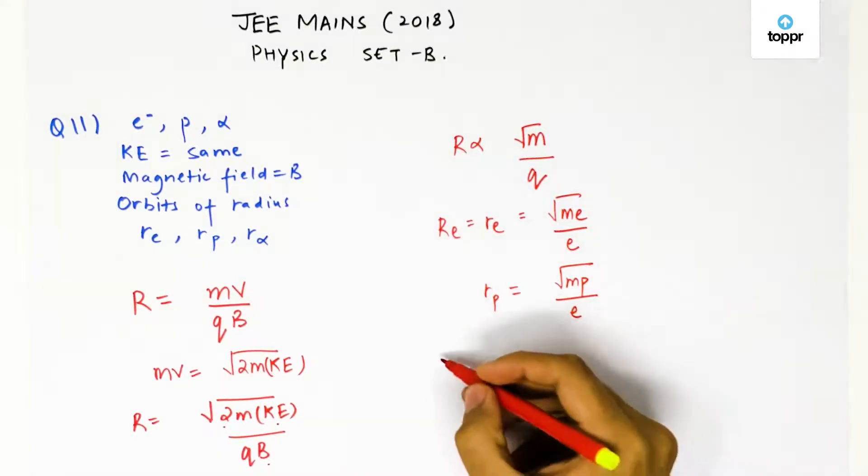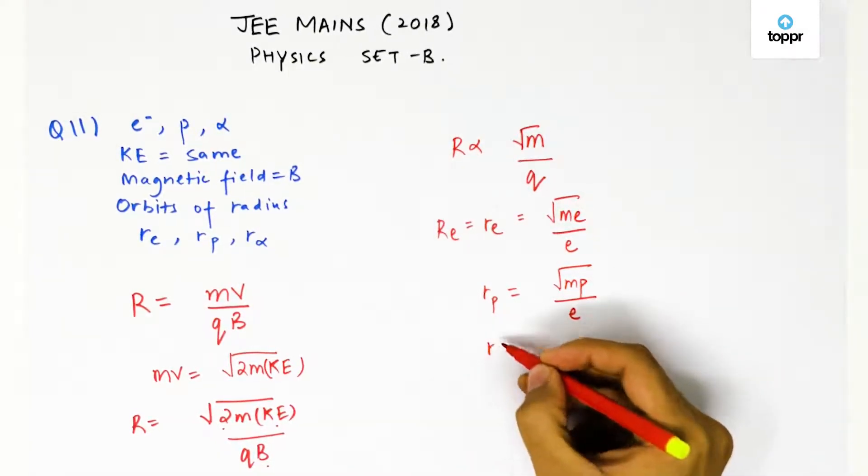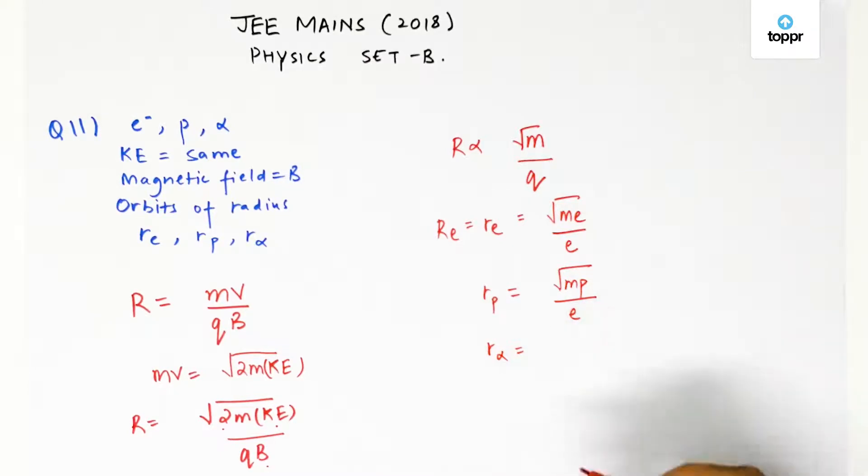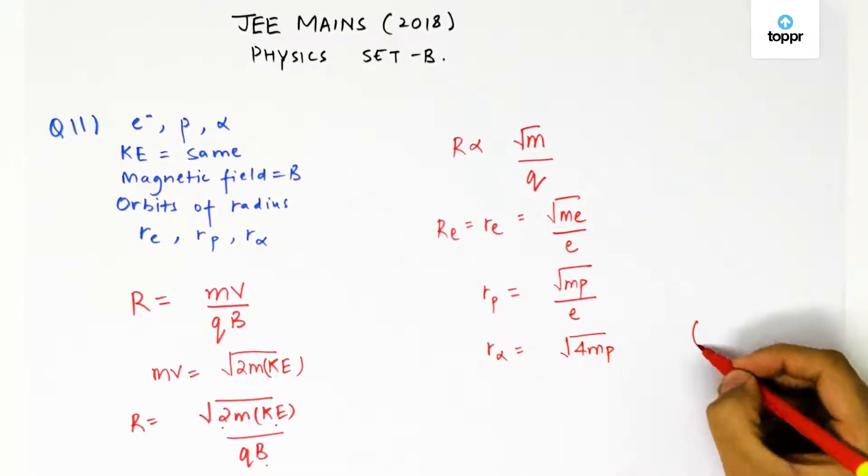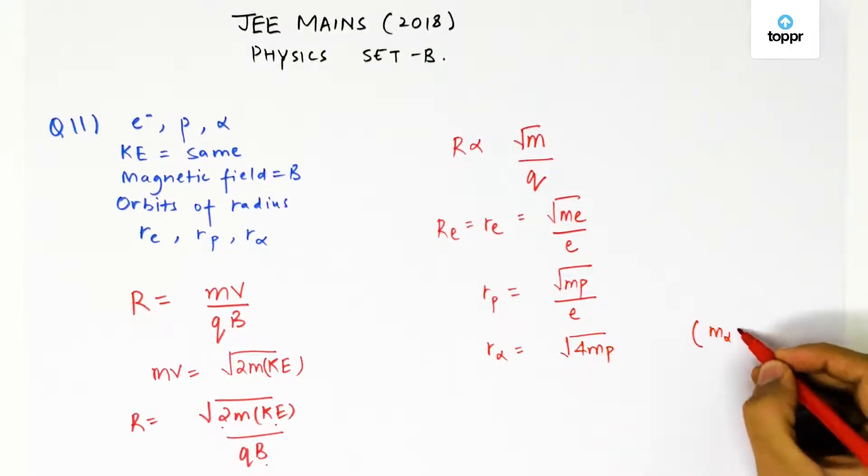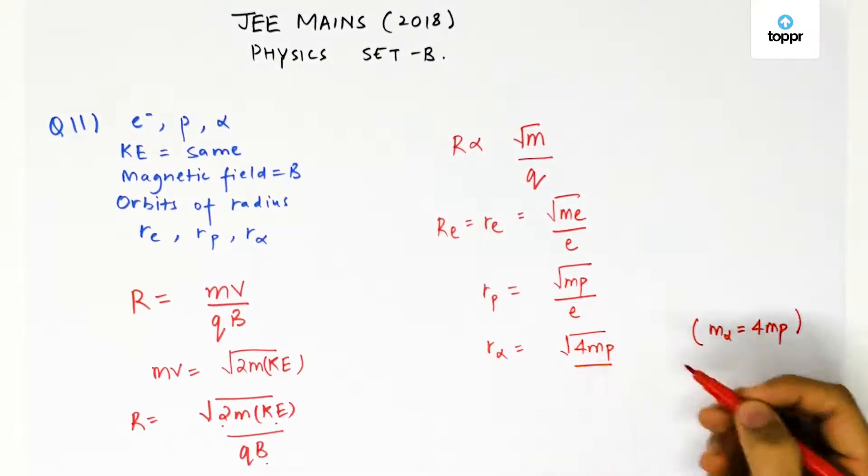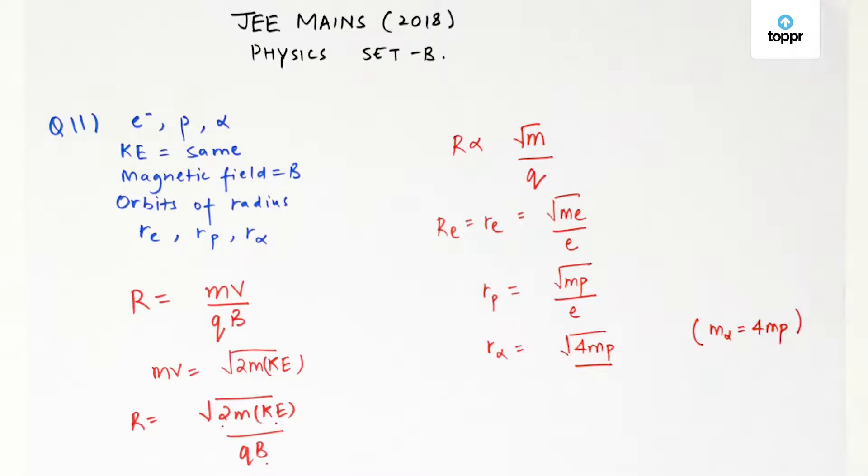And for the alpha particle, it would be mass of the alpha particle. Now, what is mass of the alpha particle? Mass of an alpha particle is 4 times mass of a proton. This is very important to note here that mass of an alpha particle is 4 times mass of the proton. And what about its charge? Its charge is twice that of an electron or a proton.